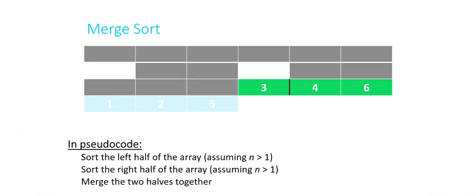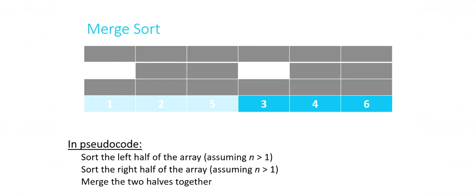Now we merge those two portions together using the same process as before. Is three lower or is four lower? Three is. Is four lower, or is nothing left on the left side? Since nothing remains on the left, everything on the right — four and six — must be bigger than what's already merged, so they all come down together. We've now completed both pseudocode steps: we've sorted the left half and the right half of the original brick red array.